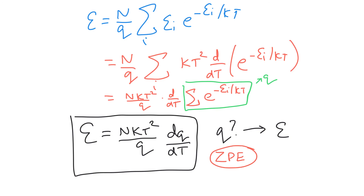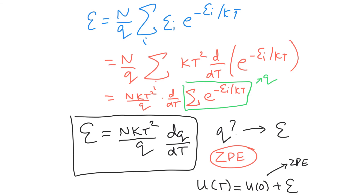One last thing: we zeroed out the zero point energy on our energy scale, so the total energy we calculated is not the real total energy. The internal energy at temperature T equals the energy we calculated plus the zero point energy of the molecule. However, we're normally only interested in differences in energy. When we calculate differences or derivatives, those constants drop out anyway. So in practice, changes in energy are just changes in this epsilon term — we don't need to worry about the zero point energy, which can't change.